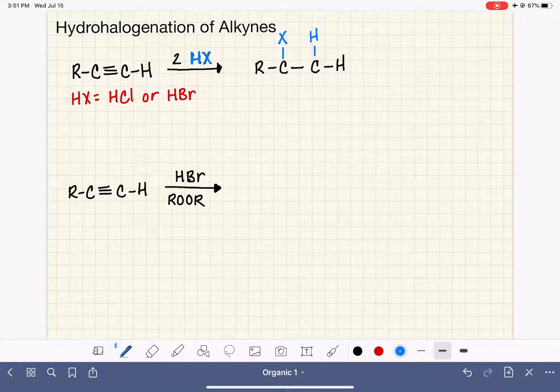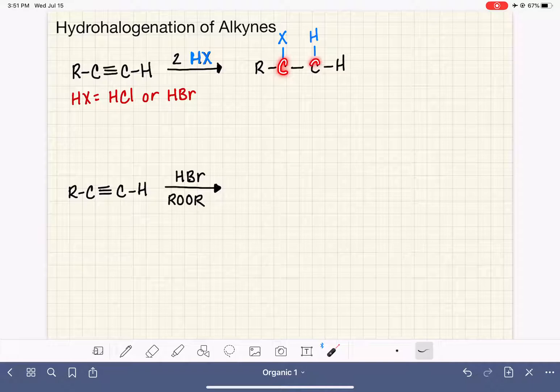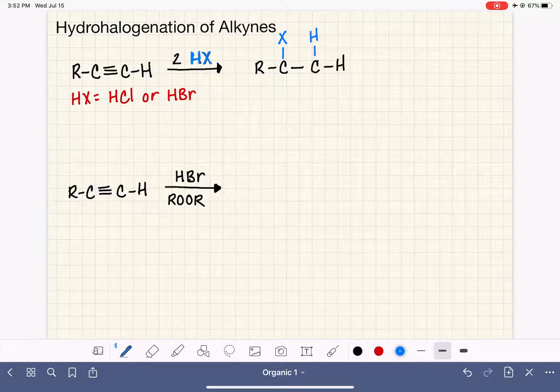Then we add our second equivalent of HX, again following Markovnikov's rule. So the second hydrogen goes on to the carbon that already has the most hydrogens present, which means that the second halogen will go on to the other carbon. So this reaction follows Markovnikov's rule.